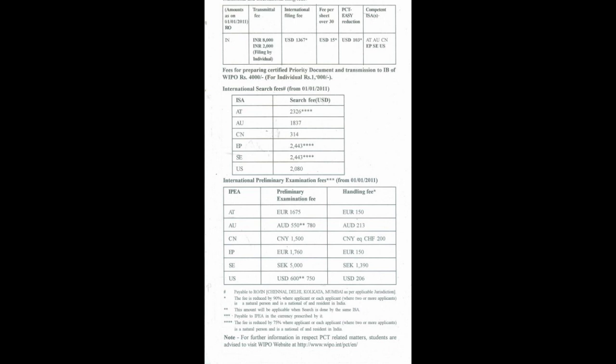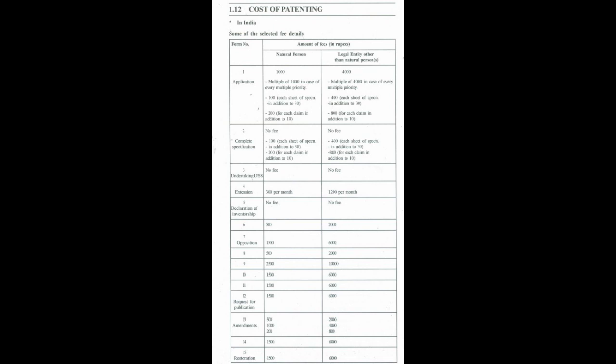Section 1.12: Cost of Patenting. In India, some of the selected fee details are available on screen. Cost of Filing Patents in Other Countries: at the outset it must be understood that the cost of filing patents, particularly abroad, can be very expensive. The approximate initial cost of filing a patent application abroad in some major countries is as follows (in rupees): Australia 60,000; Bangladesh 15,000; China 10,000; Indonesia 40,000; UK 90,000; USA 80,000; Malaysia 30,000.